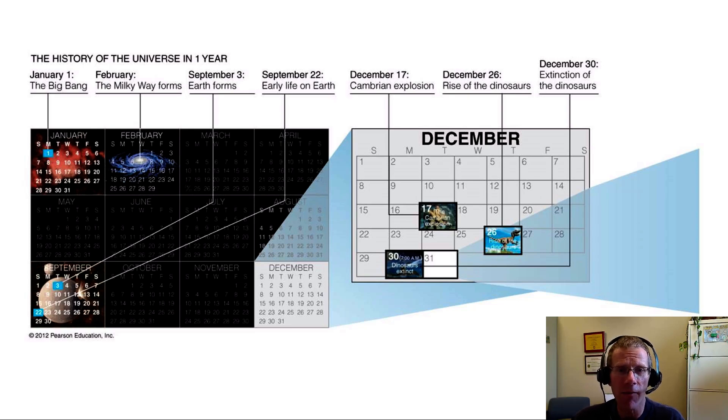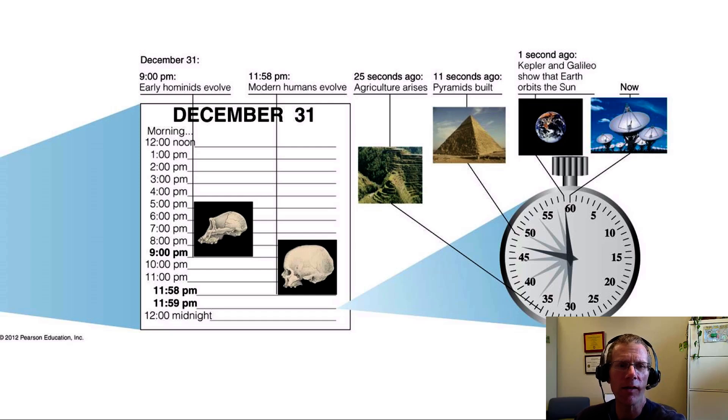So the dinosaurs in this scale lasted four days. You're thinking four days, stupid dinosaurs. Oh, maybe stupid us. Because if we look at this, all of the human family tree happens in the very last day. So at nine o'clock, our earliest humanoid ancestors have evolved. Two minutes before midnight is when modern humans evolve. And then just the last minute of this year, agriculture arises, the pyramids built. Most of the stuff that this book is based on, well, all the stuff this book is based on, is in the last few seconds. Most of what the book is based on is just in the last second.